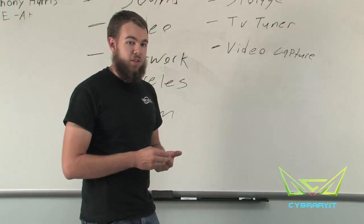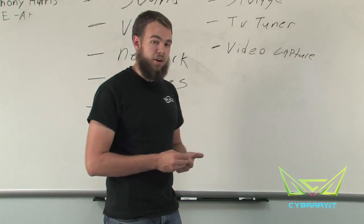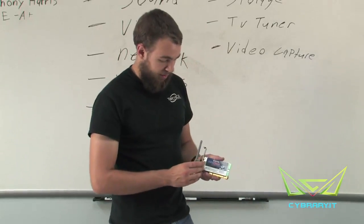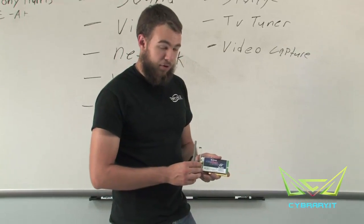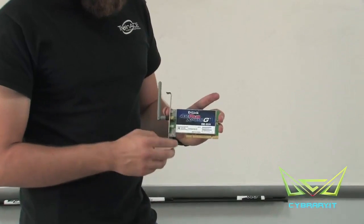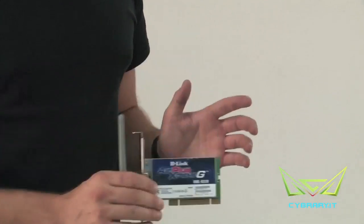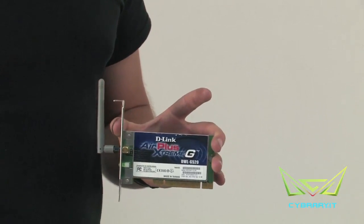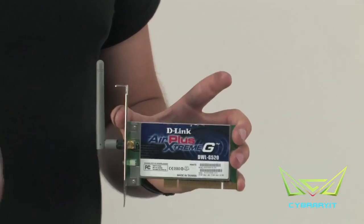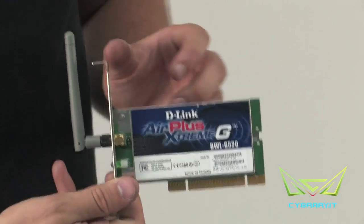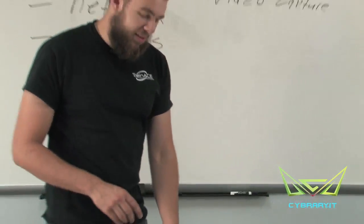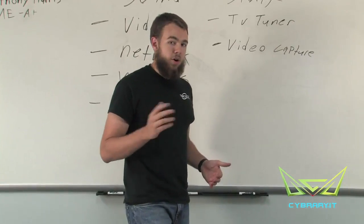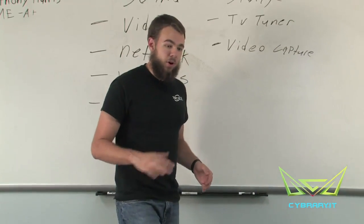Next, we want to check the adapter card documentation. For example, this D-Link wireless adapter card. You couldn't just take this card, put it directly into the motherboard, and expect your computer to have wireless capabilities. There's something that you would need to do called installing a driver. Now, a driver is basically a piece of software that allows our computer, our operating system, to interact with the hardware.